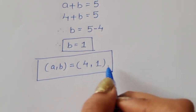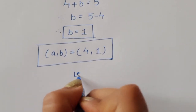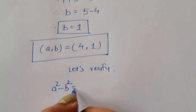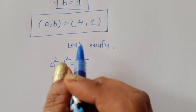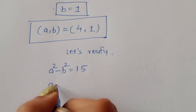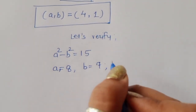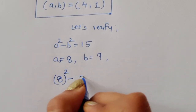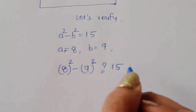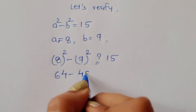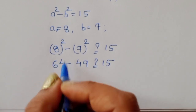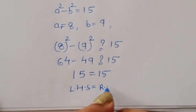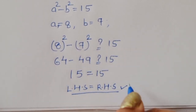Now we have to verify whether these values are correct. For the first pair, A equals 8 and B equals 7: A squared minus B squared gives 8 squared minus 7 squared, which is 64 minus 49, equal to 15. So LHS equals RHS, and the first solution A equals 8, B equals 7 is verified.